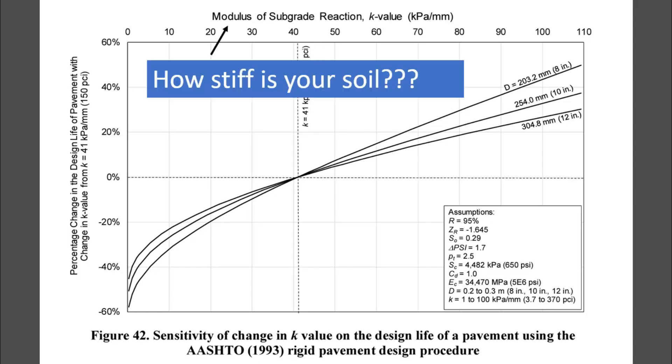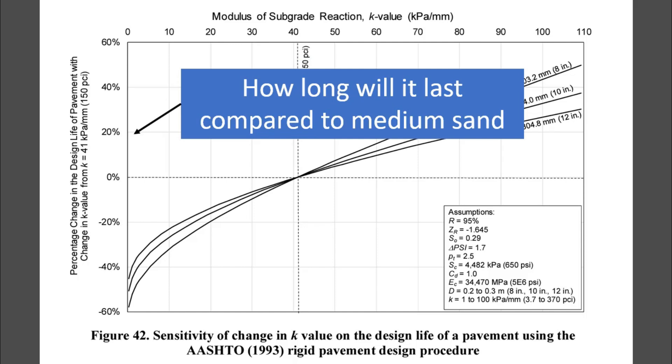On the x-axis of the graph is the subgrade reaction or that K value. That's how stiff your soil is. And then on the y-axis is how long will it last compared to something called medium sand. And we'll talk about and define what that is today.